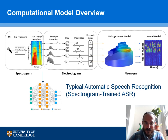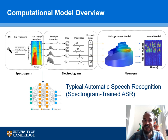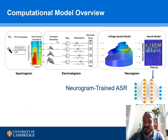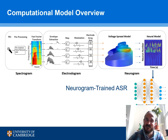Typical automatic speech recognition neural networks are trained on spectrogram representations of speech. What we've done is train an automatic speech recognition neural network on all of these neurograms, and we expect that we'll get similar phonemic information transmission in these neurograms because we're degrading information in a similar way to what happens in cochlear implants.